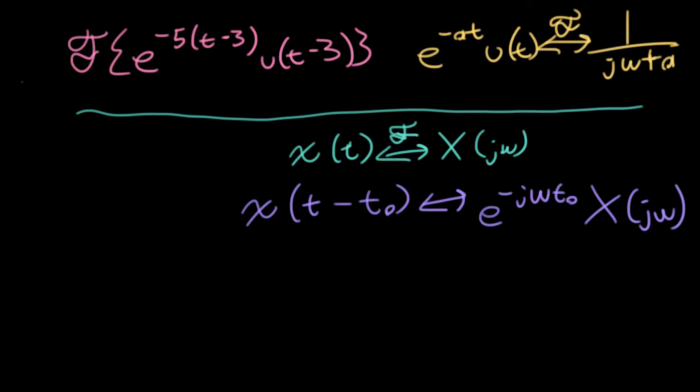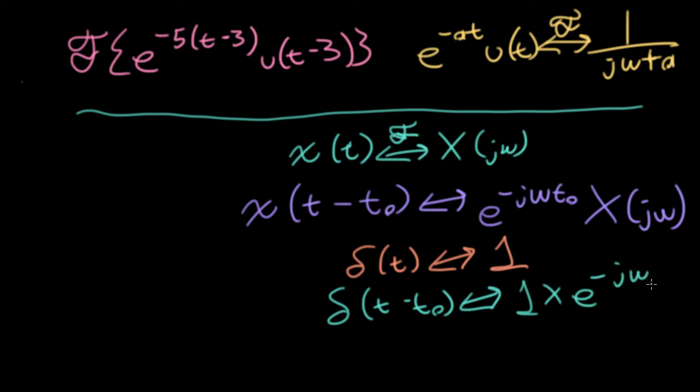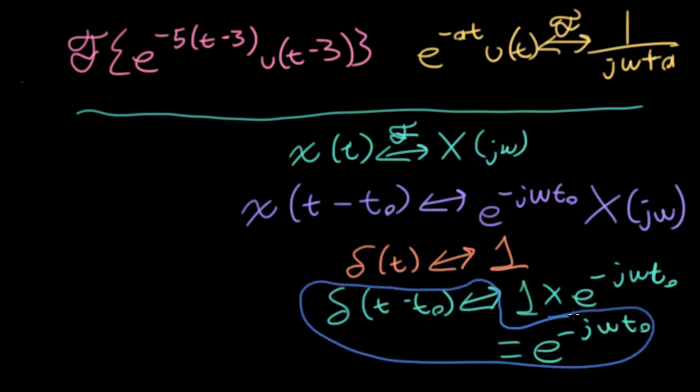Let's do another quick and easy example. In the last lecture, we showed that delta of t transforms into a constant of 1. What would delta of t minus t naught transform into? Well, using the shift property, we would just take this 1 and multiply it by e to the minus j omega t naught. Well, that's just e to the minus j omega t naught. Now, this shouldn't surprise us, because we actually proved this in the last lecture using the Fourier transform integral. This would be just another way to think about it.